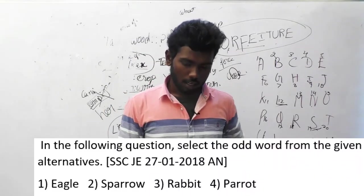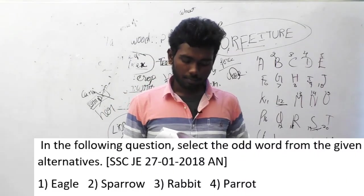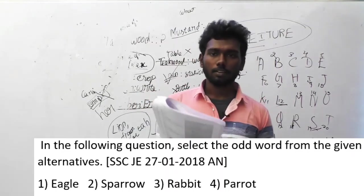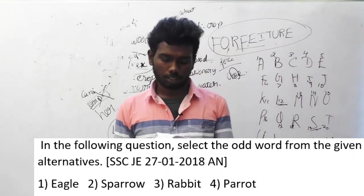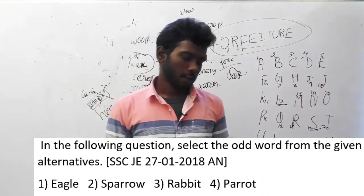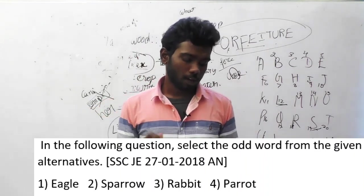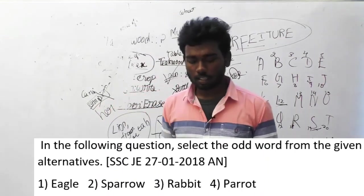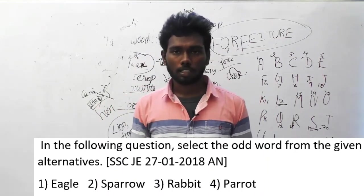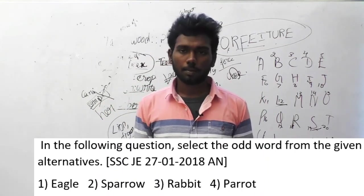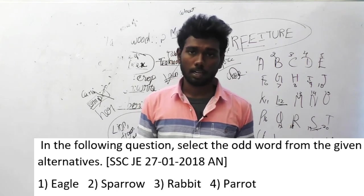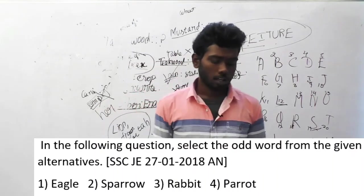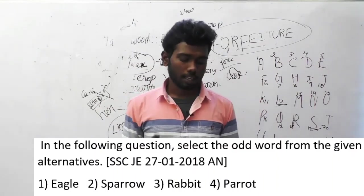Let's move on to question 158. In the following question, select the odd word from the given alternatives. This question was asked in SSC JE, 27th January 2018, afternoon session. Options are: eagle, sparrow, rabbit, parrot. Except rabbit, all the others are birds — eagle is a bird, sparrow is a bird, parrot is a bird. Rabbit is an animal and cannot fly. So rabbit is the odd option. The answer is option C, rabbit.